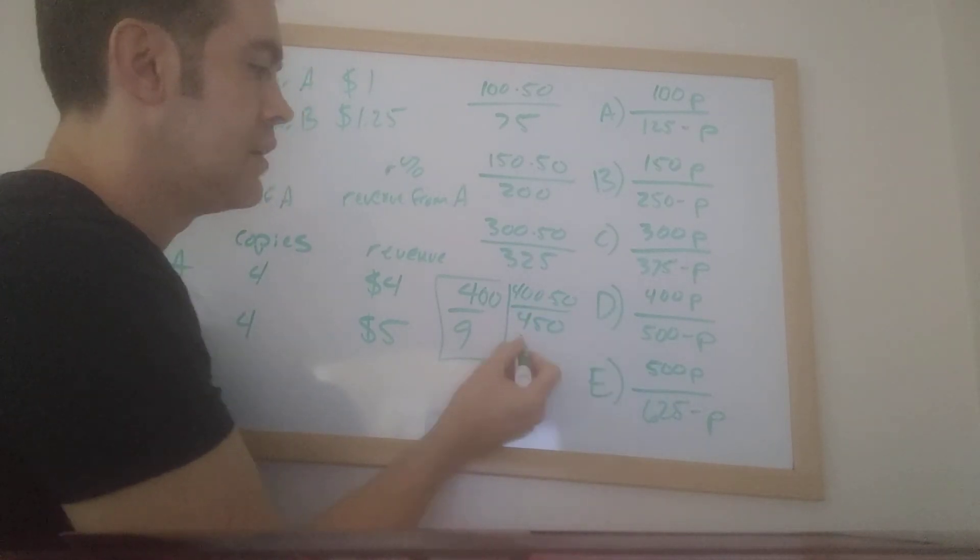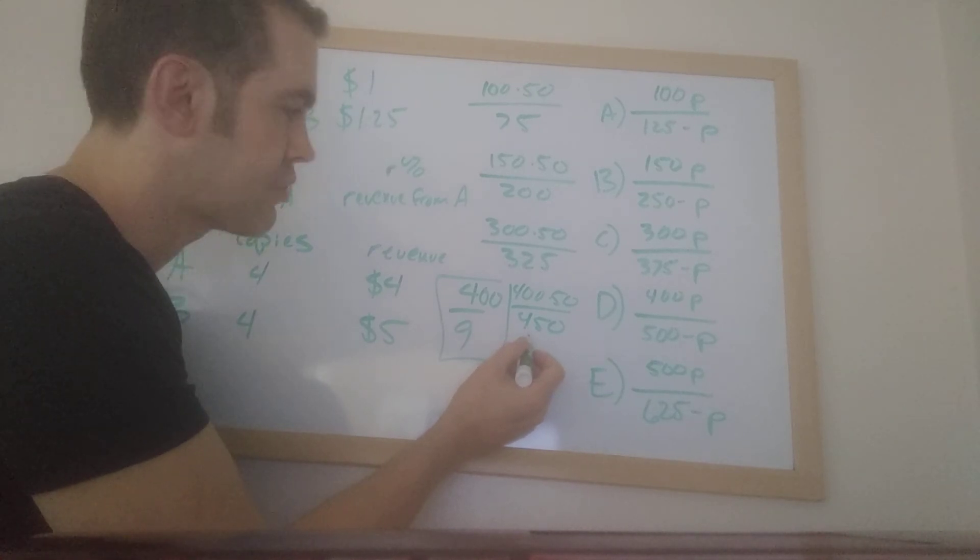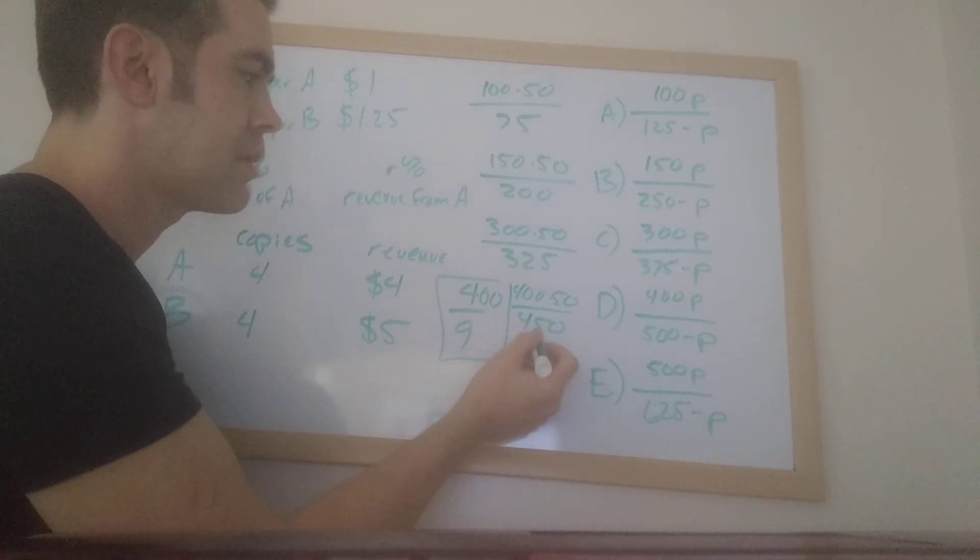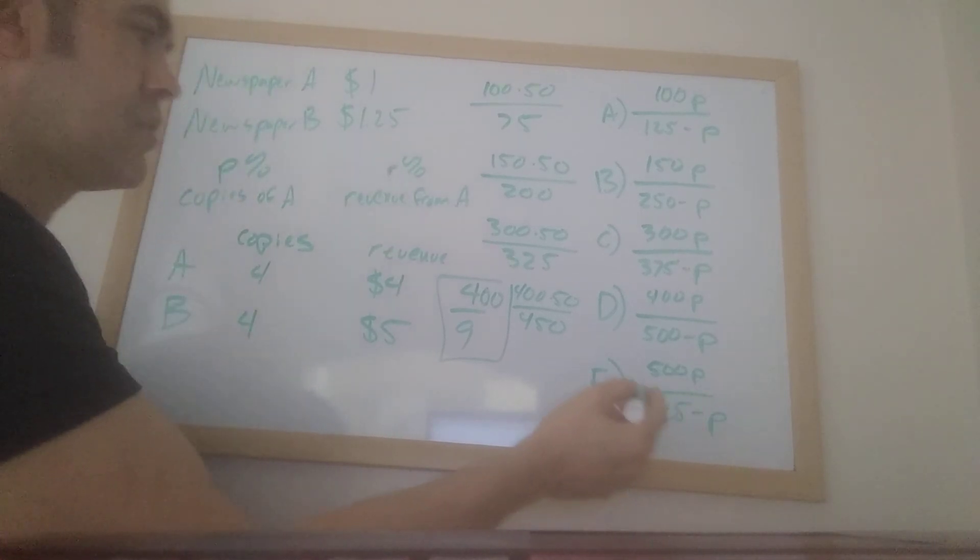500 minus 50 gets me 450. That looks good. Because 450 does have a 9 in it, right? Because 9 times 5 is 45. So this one looks pretty good. I'll pause on this. Let's look at this just to be sure.